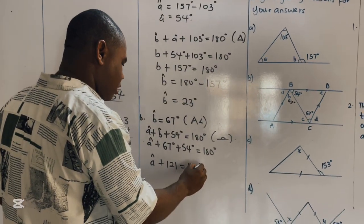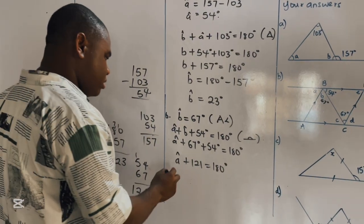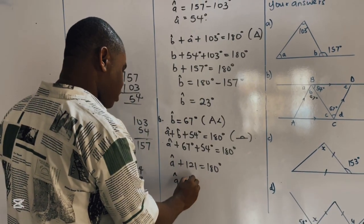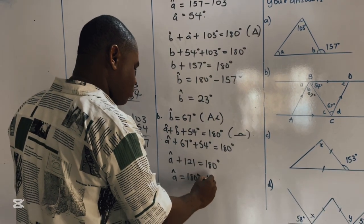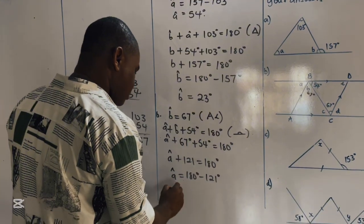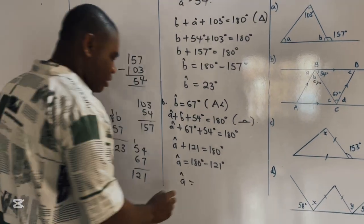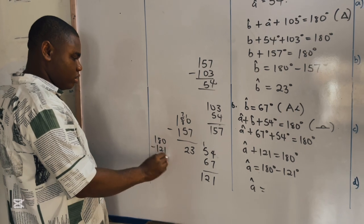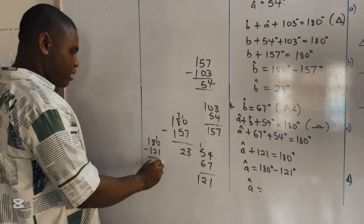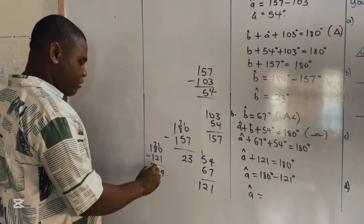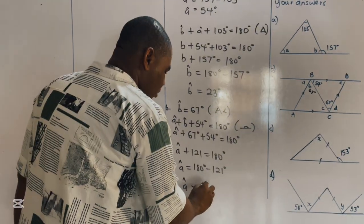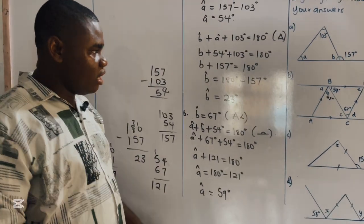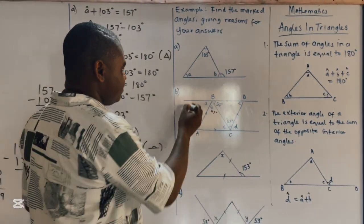So we have 54 plus B plus 67 equals 121 degrees, which equals 180 degrees. Therefore angle A equals 180 degrees minus 121 degrees, which gives us 59 degrees. So angle A in this case is 59 degrees.